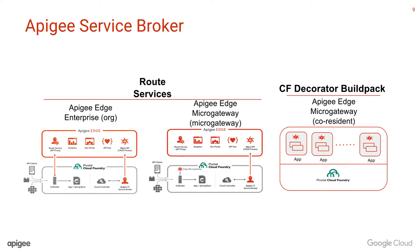How micro gateway works is that you launch micro gateway as a separate application within Cloud Foundry. Similar to Apigee Edge, traffic comes into the Go router, gets redirected into the micro gateway application, it processes the request, and then it sends it back to the Go router, which then sends it back to your application. So it's a little bit less network hops because you just stay within Cloud Foundry itself.